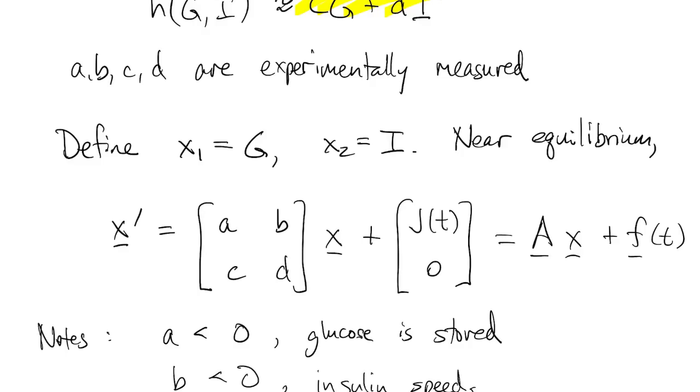B also should be negative because the presence of insulin speeds up the body's use and storage of the glucose.